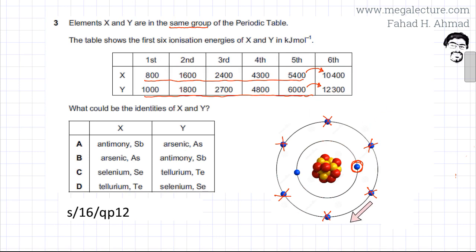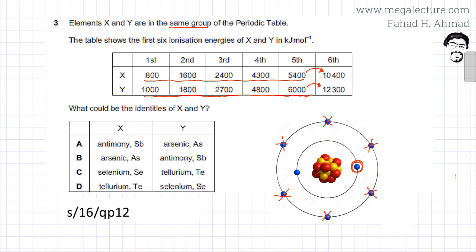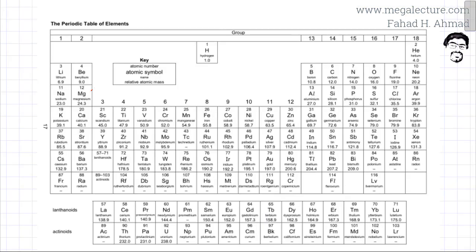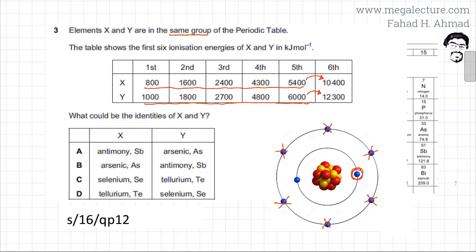This tells us that both elements X and Y are in Group 5, because getting rid of the first five electrons is easy — meaning those five electrons belong to the outermost shell. The distance from the nucleus and the shielding effect make removing those five electrons easier compared to removing the sixth. So both elements are in Group 5.